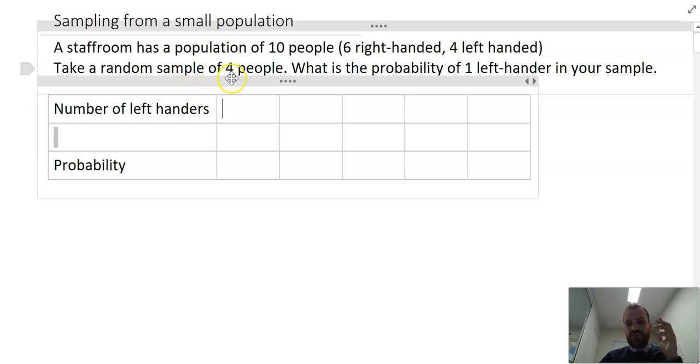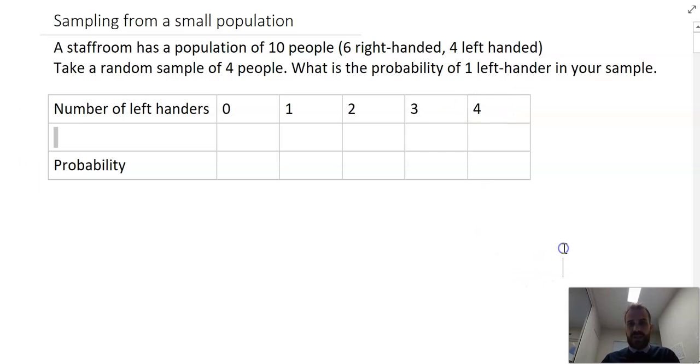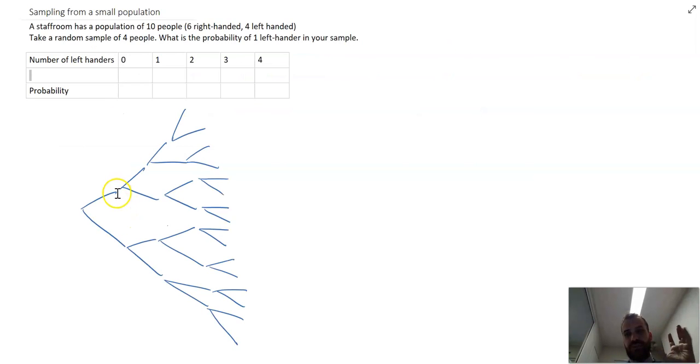I'm taking a sample of four people. What is the probability of exactly one left-hander in the sample? I'm going to do up my probability distribution. I could have zero left-handers, one, two, three, and four left-handers in my sample. One way to do it would be to draw up a tree diagram. This tree diagram is getting pretty out of control. We'll come up with better ways to do it in a second, but I just want to illustrate what's going on.